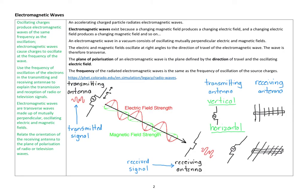Let's start off, as we often do, by looking at what the SACE board says we need to know, or what is the learning intention for this part of the course. Oscillating charges produce electromagnetic waves of the same frequency as the oscillation. Electromagnetic waves cause charges to oscillate at a frequency of the wave.